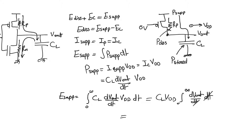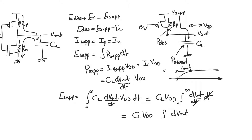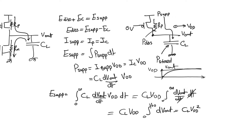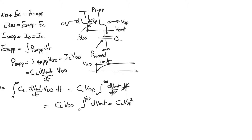Now the integration is with respect to dV_out. When time equals zero, V_out equals zero; when time equals infinity, V_out does not rise above V_DD. So the limits of integration become zero to V_DD instead of zero to infinity. Therefore the energy drawn from supply is C_L · V_DD². As we charge the capacitor from zero to V_DD, we draw an amount of energy from the supply equal to C_L · V_DD². It's a finite amount because eventually the current dies out.